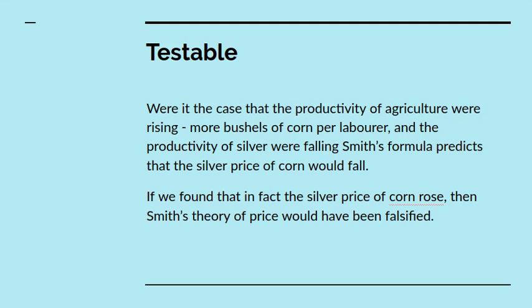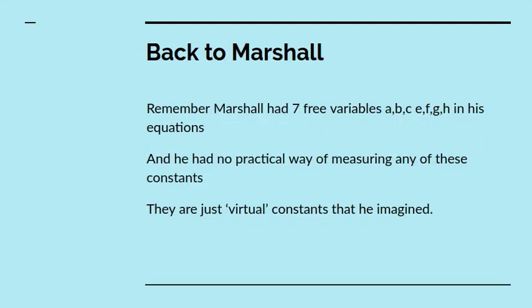Now he has a testable theory here, Smith has, because in the case that the productivity of agriculture were rising, that is to say more bushels of corn were produced per labour, and the productivity of silver were falling, that is to say the silver mines were getting depleted and requiring more labour. Smith's prediction is that the formula predicts that the silver price of corn will fall, that is to say a given pound of silver will buy more corn. If we found historically that in fact the silver price of corn rose, then Smith's theory of price would have been falsified. Smith actually went back looking at price records of corn on the Winchester market to 1200 AD. He's writing in the mid 1700s, so he looked 500 years back at the corn prices to test his theory.